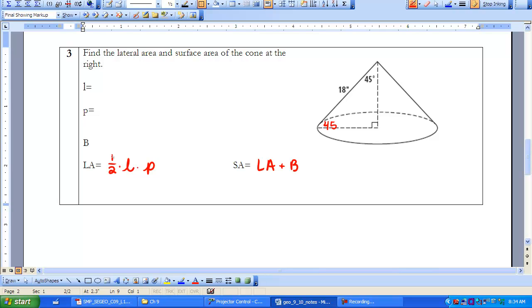So that brings us into our special right triangles that we discussed in Chapter 8. We know that if this is 18, that's the hypotenuse, and that's the same as the x root 2. So if 18 is equal to x root 2, then we know that we can solve for x by dividing by root 2, which would give me 9 root 2. So that means the height of my cone is 9 root 2, and the radius of my cone is also 9 root 2.